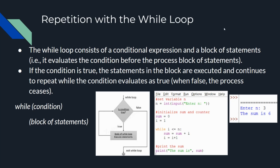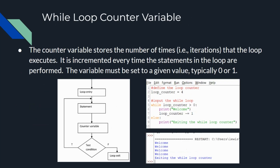The while loop consists of a conditional expression and block of statements. This construct evaluates the condition before the process block of statements is executed. If the condition is true, the statements in the block are executed. This repeats while the condition evaluates to true; when the condition evaluates to false, the loop terminates. The actions in the process block are performed while the condition is true. After the actions in the process block are performed, the condition is again evaluated, and the actions are again performed if the condition is still true, otherwise it terminates. The condition is tested first, and then the process block is performed. If this condition is initially false, the actions in the block are not performed.